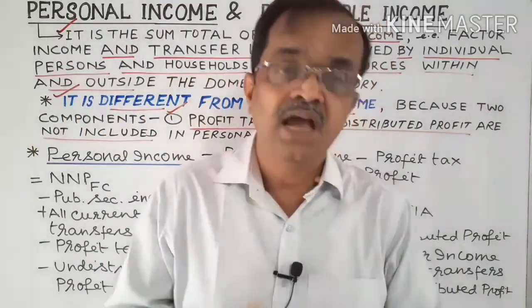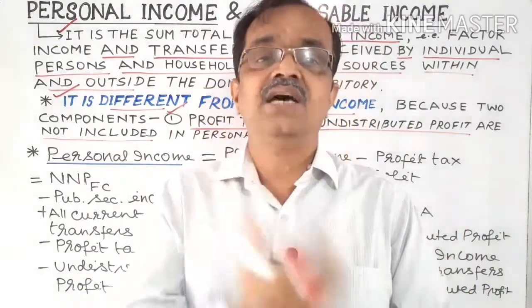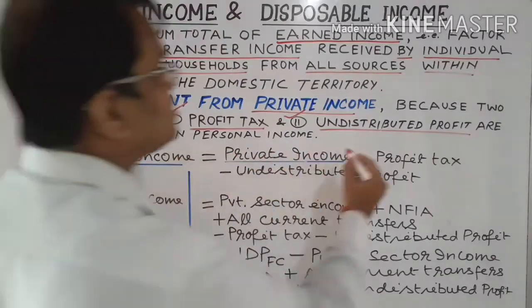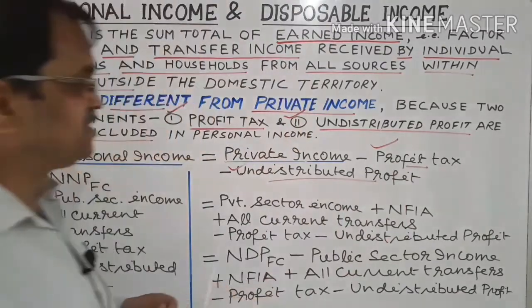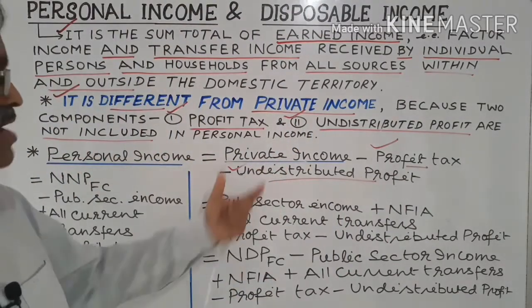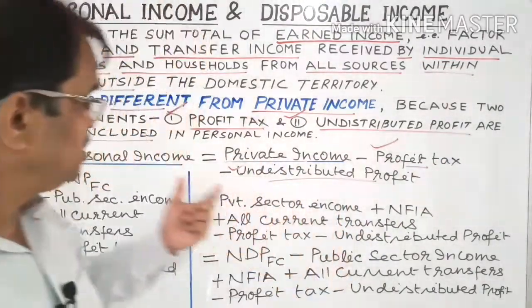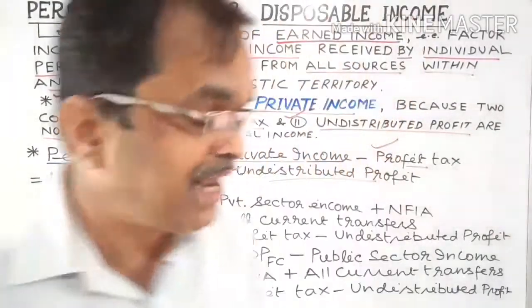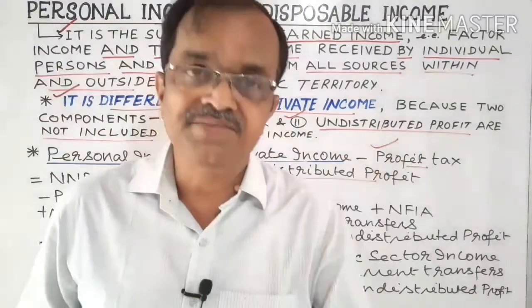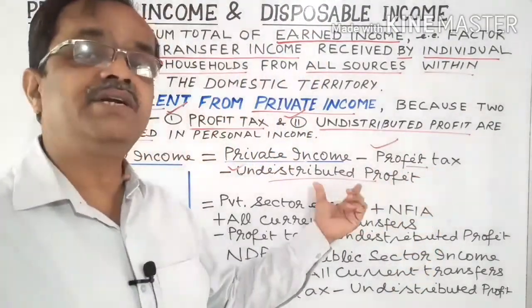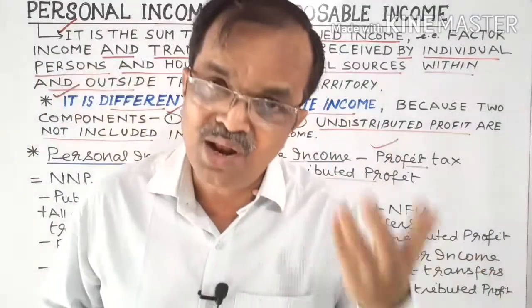The question arises: how do we calculate personal income? It is calculated by deducting these two components — that is, profit tax and undistributed profit — from private income. We simply deduct these two components from the private income and then we get personal income.